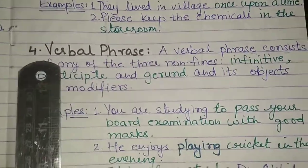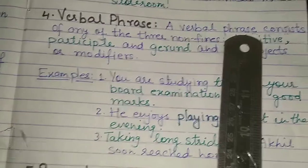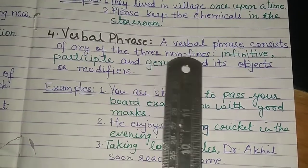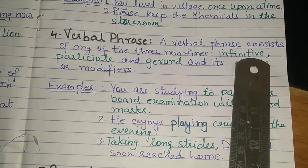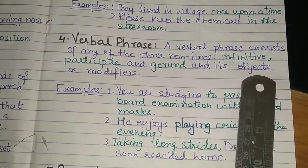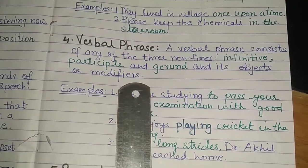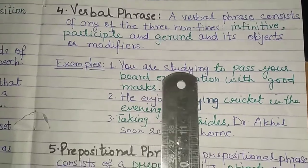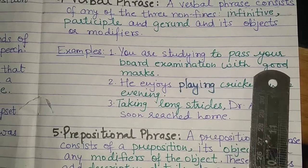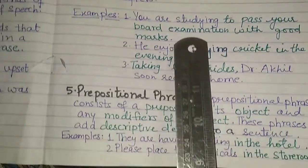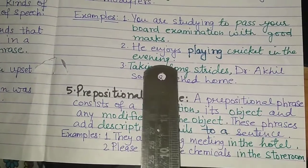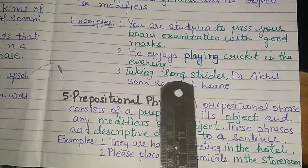The fourth kind is the verbal phrase. A verbal phrase consists of any of the three non-finites — that means infinitive, participle, and gerund — and its objects or modifiers. Example: 'You are studying to pass your board examination with good marks' — that is a verbal phrase. 'He enjoys playing cricket in the evening.' 'Taking long strides' is another example.